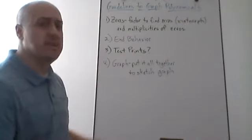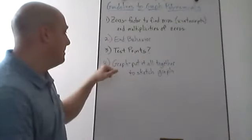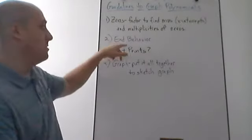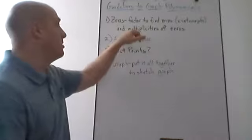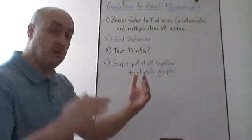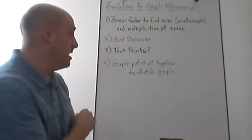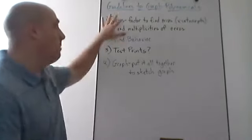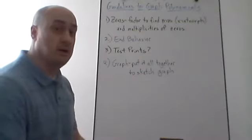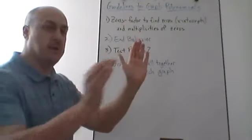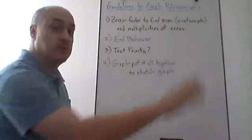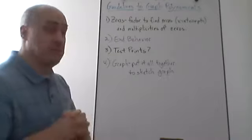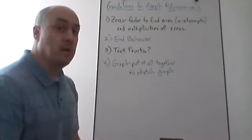The last step is to put it all together and sketch the graph, making sure it has the correct end behavior, hits the right x-intercepts, and behaves correctly at each one. No part should contradict any other part — it all has to fit together harmoniously to create the graph of the polynomial function.